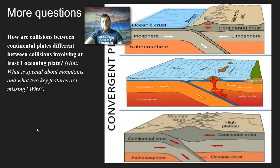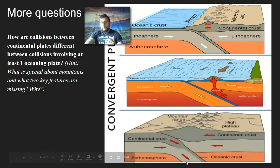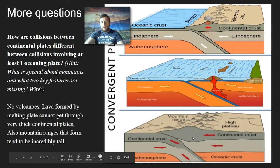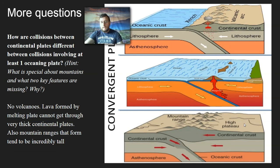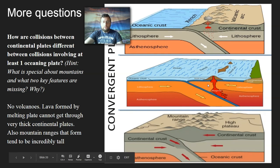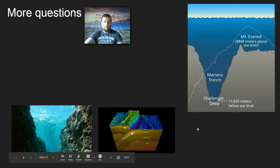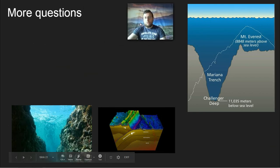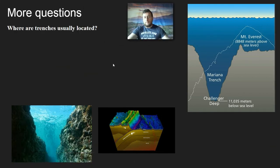We also have collisions that happen between two continental plates. The key difference is that you don't see magma rising because the crust is too thick to melt through. You also see larger mountain ranges because it's two enormous continents colliding against each other, leading to enormous plateaus and mountain ranges. So you don't get a volcanic arc, but you do get larger mountains. Trenches will also form in continent-versus-ocean and ocean-versus-ocean collisions.